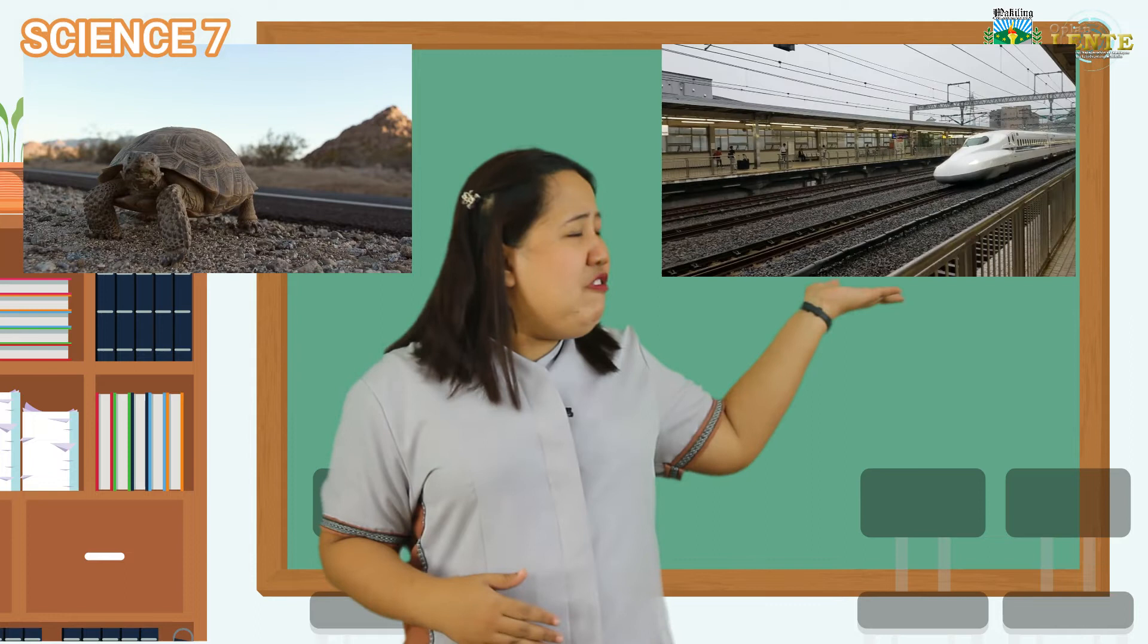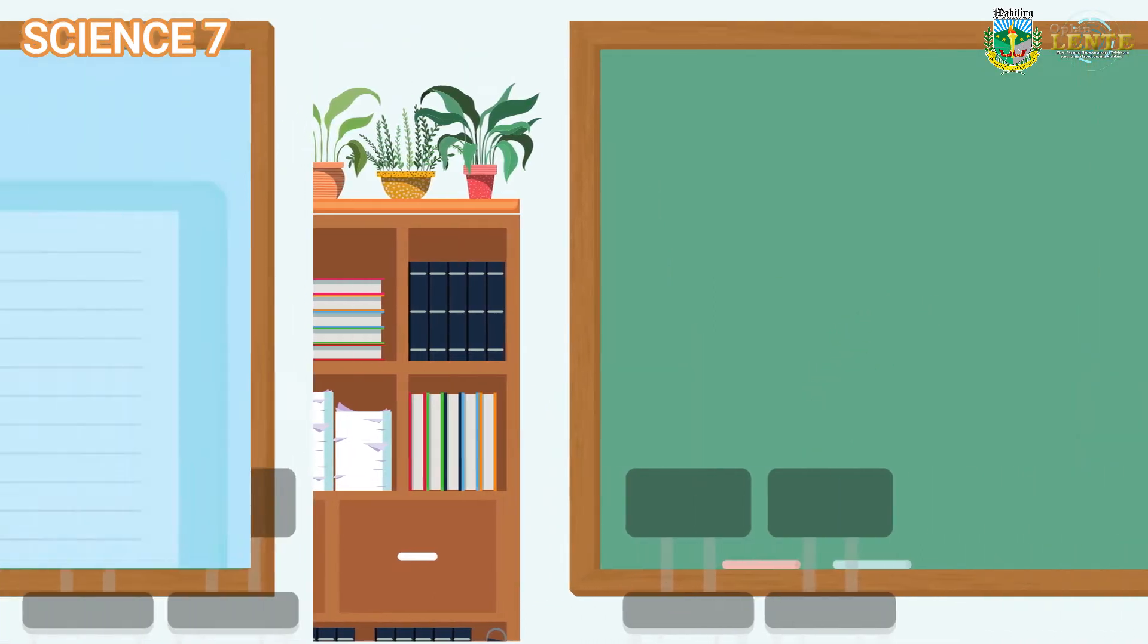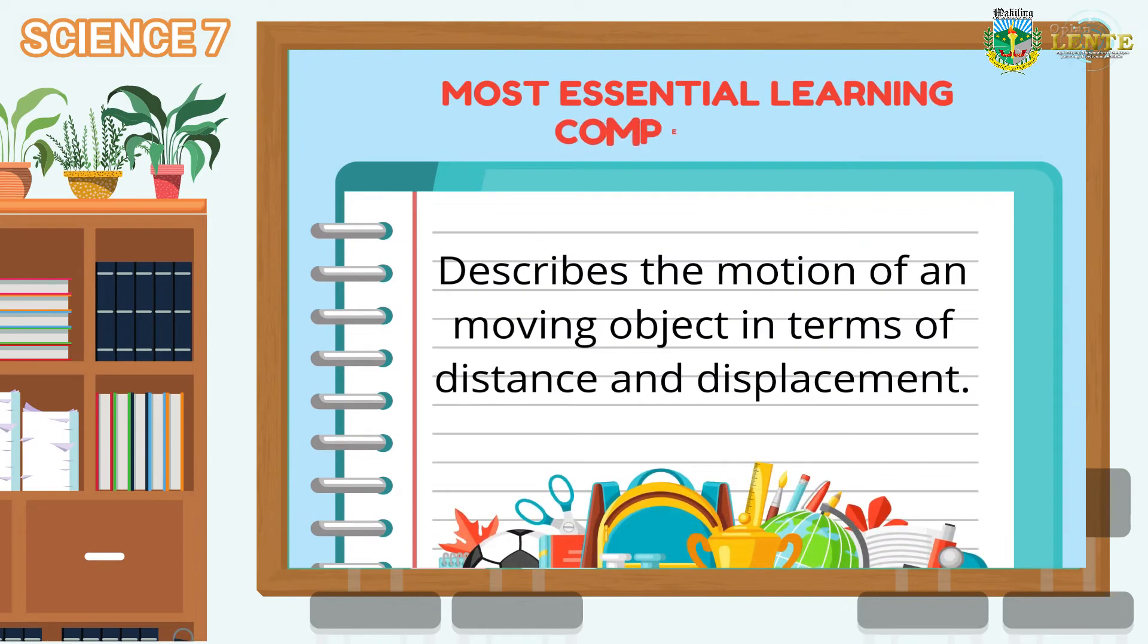Many things around us tend to move. Some move slowly like a turtle and some move fast like a bullet train. For today's lesson, we are going to describe motion when it comes to the distance and displacement taken by an object.